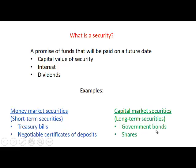Government bonds are long-term securities issued by the government. Shares are a type of long-term security issued by a company on which dividends are paid, while companies can also issue company bonds on which interest will be paid. There are other types of securities, but we are not going to look at those in this module.